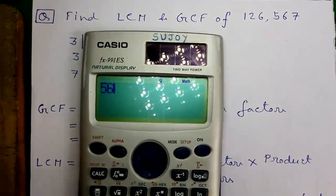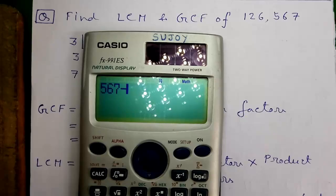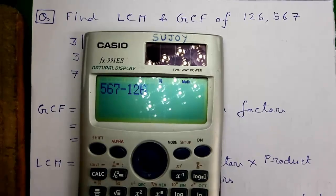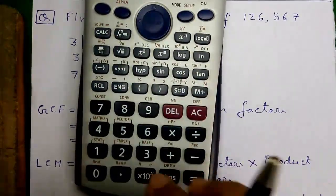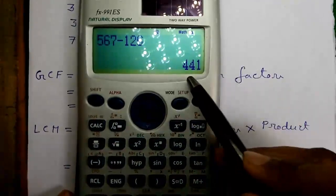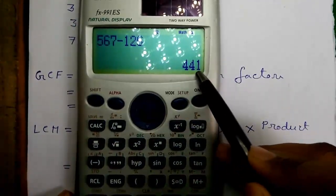A is now 567 minus B is 126, and press the equals button. That's equals to 441.